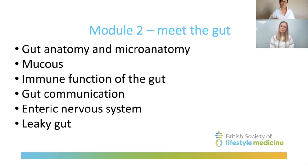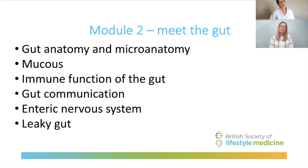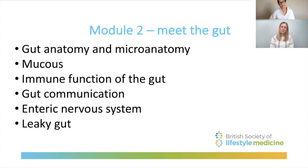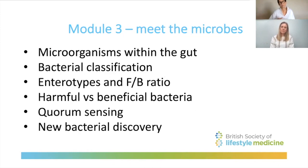An important part of that communication is the enteric nervous system, which is the size of a cat's brain, made up of neurons strung along the gut barrier — very important in gut function and in communication via the vagus nerve between the gut and the brain. We finish module two with the slightly controversial leaky gut syndrome, discussing what gut barrier dysfunction entails, how you can diagnose it, and the concerns and controversies around this area.